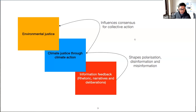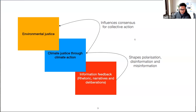Feel free to ask questions at any point. This is the broad framework we often use in our group to understand different layers of environmental justice and climate justice literature using more data-driven approaches. That's the whole basis of computational social science — dealing with theoretical settings of social science literature while also getting a sense of how different data-driven approaches can help understand those better.